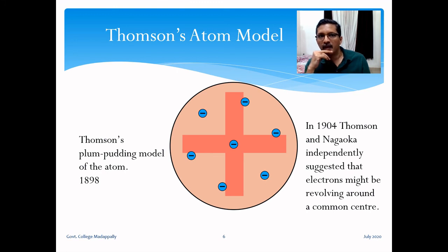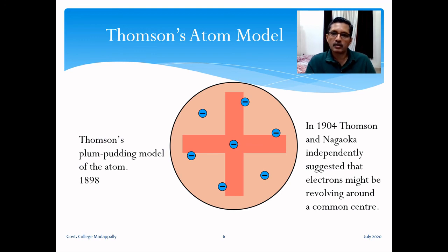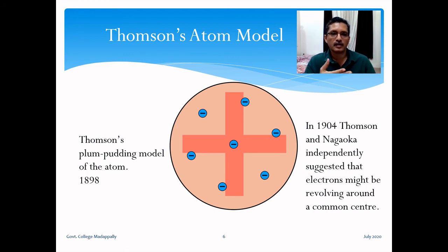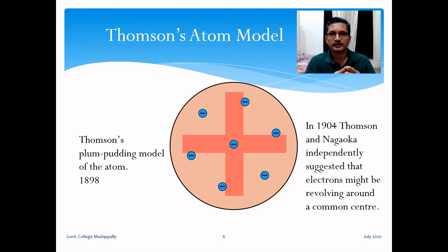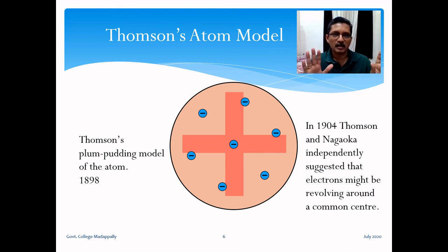Six years later in 1904, Thomson and also independently the Japanese physicist Nagaoka proposed a planetary model of the atom. In Thomson's case it was a modification of his plum pudding model: electrons revolve around a common center. The basic idea remained that the electric charge is uniformly distributed over the entire spherical atom. This was Thomson's atom model.